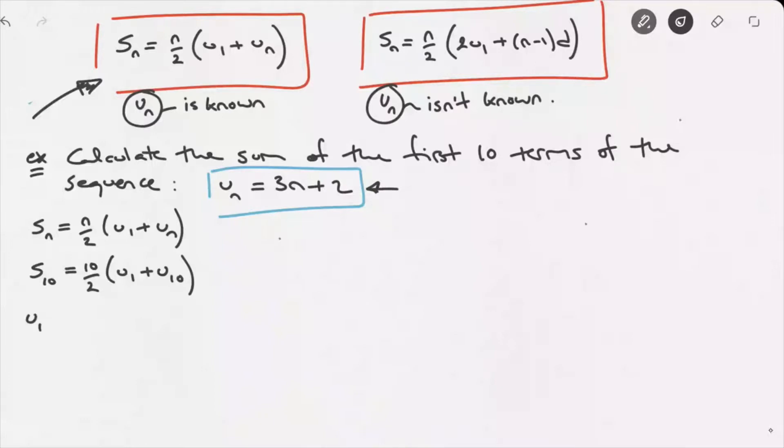u1 will be equal to 3 times 1 plus 2, which equals 5. And u10 will equal 3 times 10 plus 2, which equals 32. So we now have those two terms, u1 and u10.